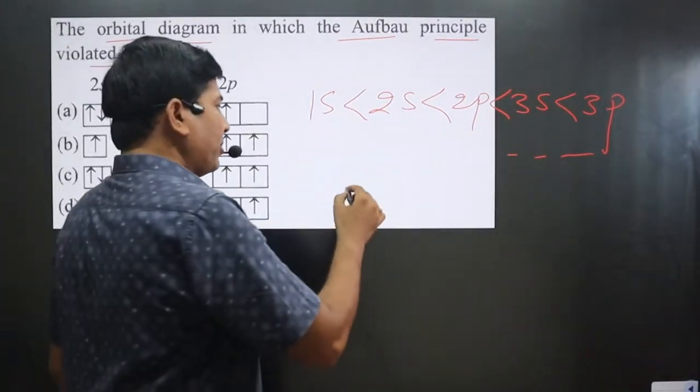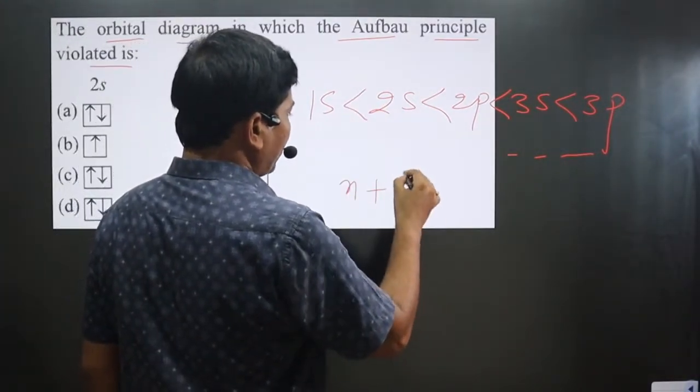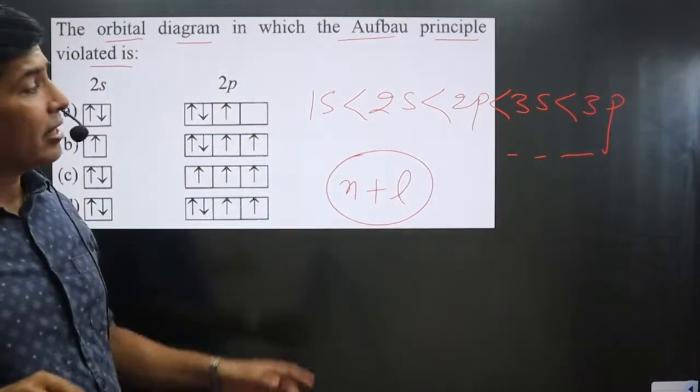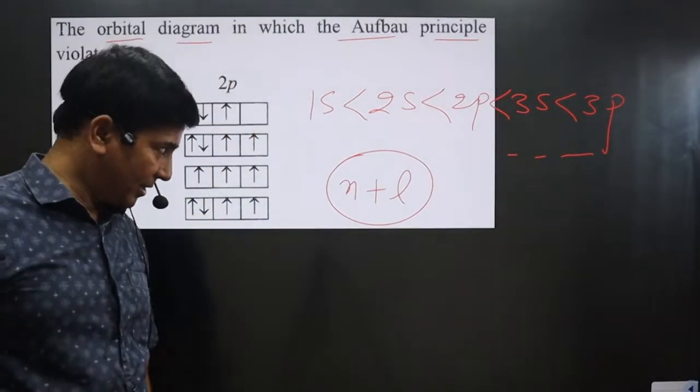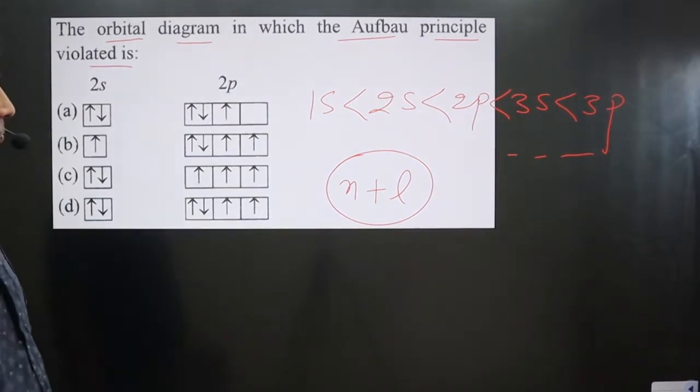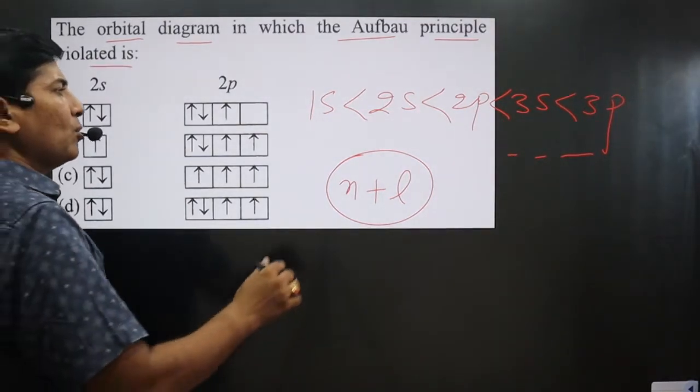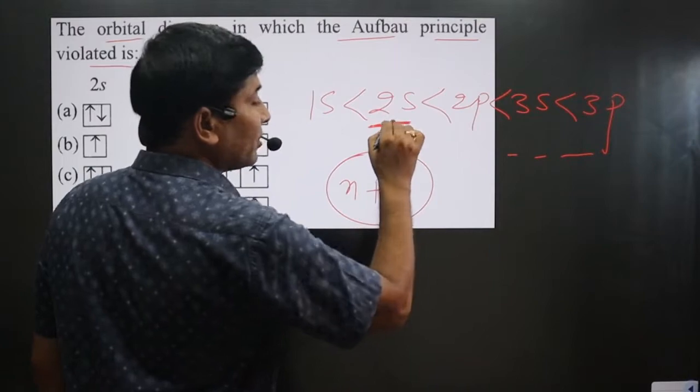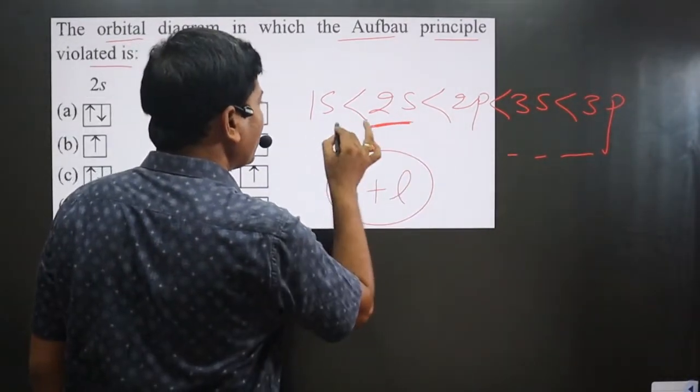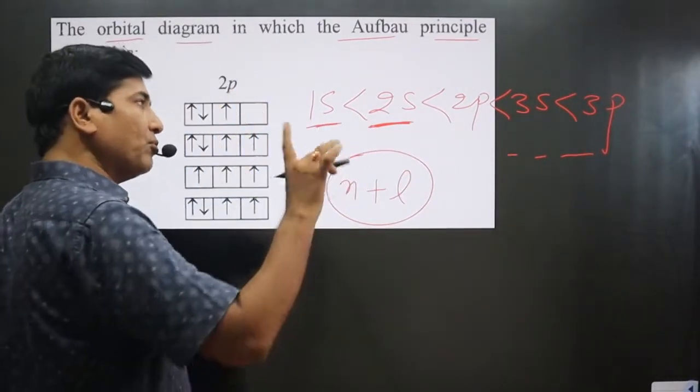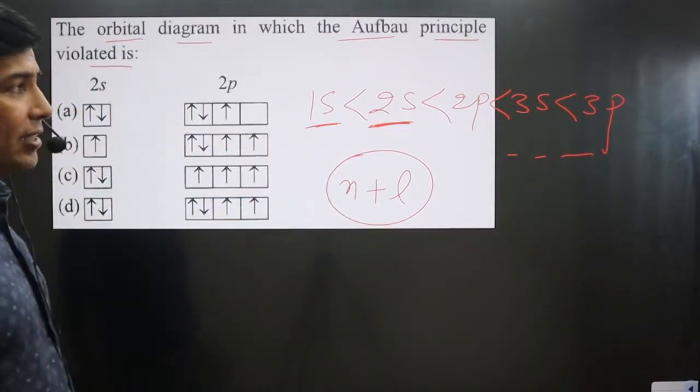Their energy can be calculated by using n plus l value. We can differentiate which has larger energy, which has lower energy. Now pay attention very carefully. The next condition is that lower energy orbitals must be filled completely before filling higher energy orbitals.